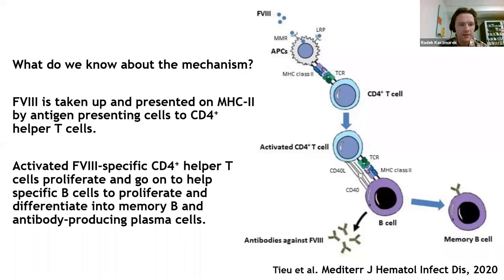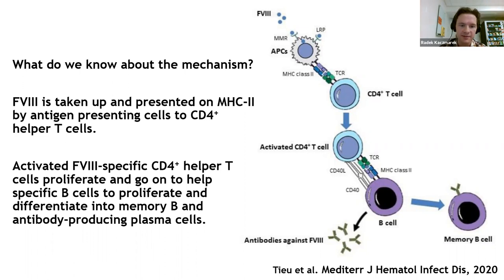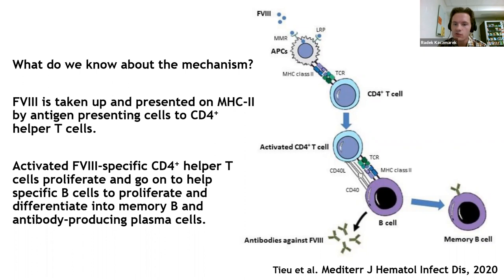Following intravenous injection, antigen presenting cells take up factor VIII, process it, and present its epitopes on MHC class II molecules in secondary lymphoid organs. CD4 helper T cells recognize the presented factor VIII, activate, proliferate, and go on to help factor VIII-specific B cells proliferate and differentiate into memory B cells and antibody-producing plasma cells. We have a good general understanding of how the immune response ensues and progresses.